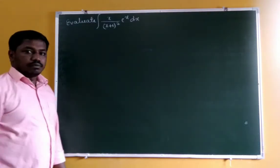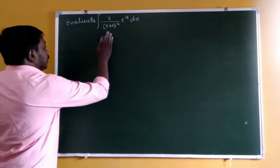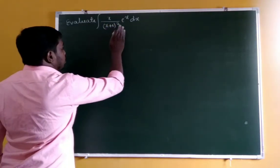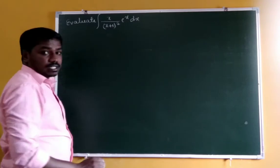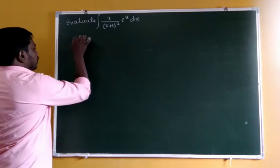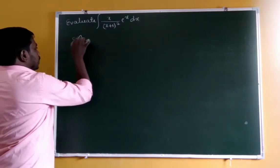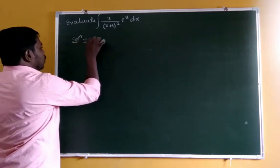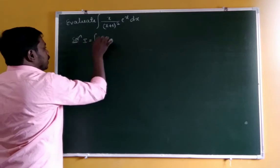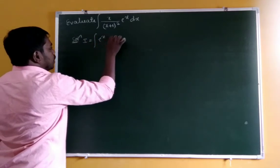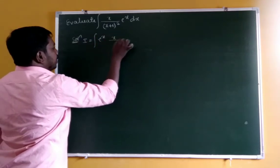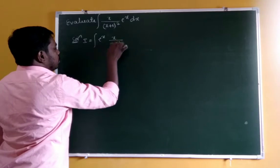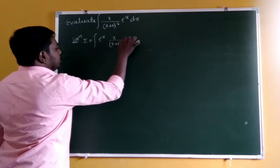Next one. Very important. Integration of x divided by (x+1)² into eˣ. Solution: I is equal to integration of eˣ into x divided by (x+1)² dx.